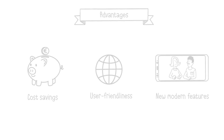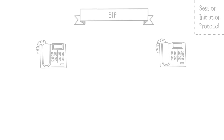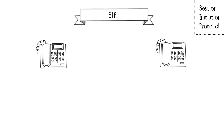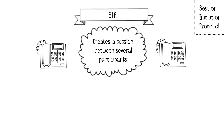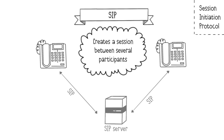Now, let's discuss VoIP protocols. The Session Initiation Protocol, or SIP, is a signaling protocol used to create a session between multiple participants, identify participants through a SIP server, instruct them to create a dedicated session for communication, modify the session — for example, extend it, add or remove participants — and finally terminate the session.